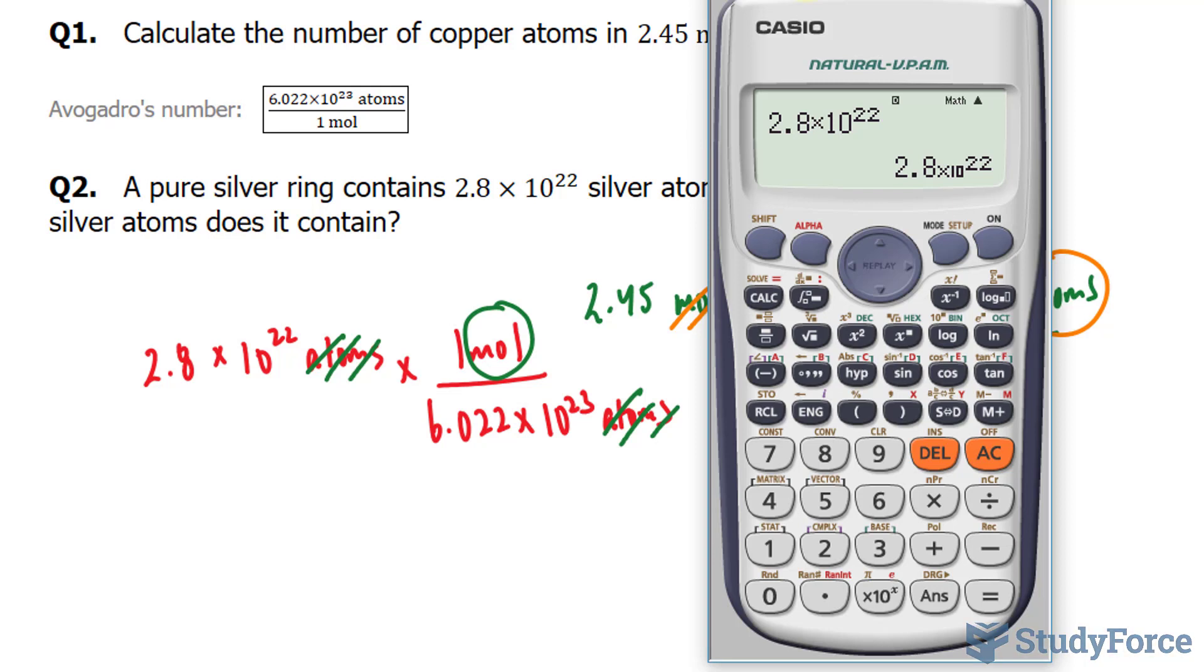Divide this number by 6.022 times 10 to the power of 23. We end up with 0.0464 moles of silver.